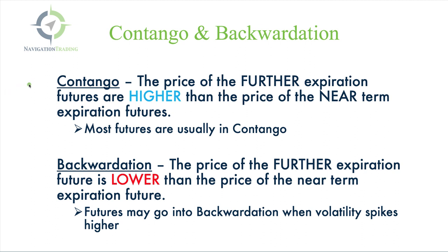What is contango? Contango refers to when the price of the further expiration futures are higher than the price of the near-term expiration futures. Most futures are typically in contango, meaning that the price of the futures in further dated expirations is higher than that of the near-term. The opposite of that is backwardation, and that's when the price of the further expiration futures is lower than the price of the near-term expiration futures.